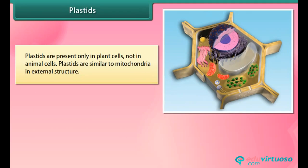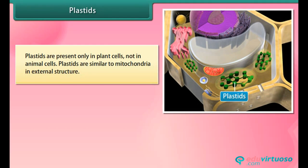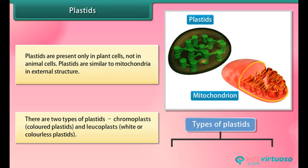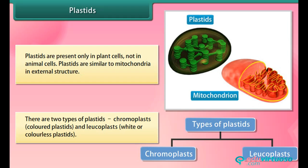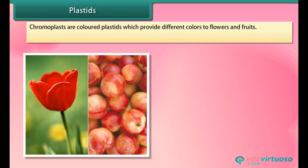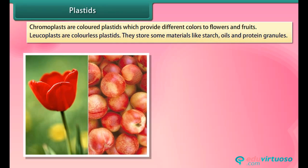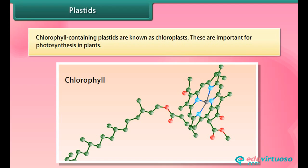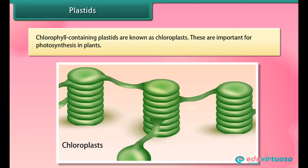Plastids are present only in plant cells, not in animal cells. They are similar to mitochondria in external structure. There are two types: chromoplasts, which are colored plastids providing different colors to flowers and fruits; and leucoplasts, which are colorless plastids that store materials like starch, oils, and protein granules. Plastids containing chlorophyll are known as chloroplasts, which are important for photosynthesis in plants.